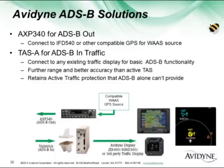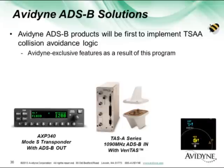Avidyne's ADS-B solutions we previously announced: our transponder is a Mode S transponder that meets the mandate for 1090 MHz out. Our TAS-A products — which we'll talk more about — is our active traffic system with ADS-B-In capability, giving you ADS-B-In over 1090 MHz. These products will be the first to implement this TSAA logic, and that will be rolled into the MOPS over the next couple of years, modifying TSO-C195 to incorporate those minimum operating performance specs.